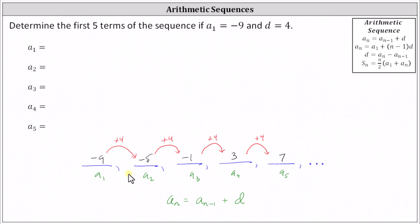We could also have used the explicit formula for any term in the arithmetic sequence: a sub n equals a sub one plus the quantity n minus one times d. Using this formula, we would have a sub n equals negative nine plus the quantity n minus one times the common difference d, which is four.